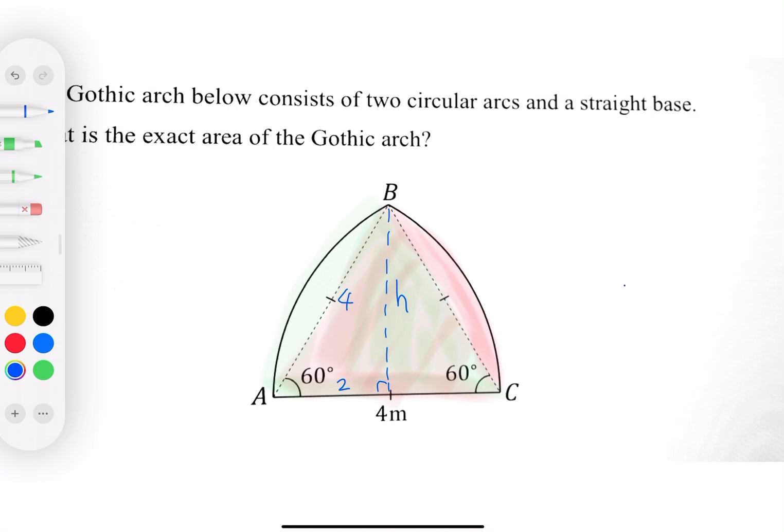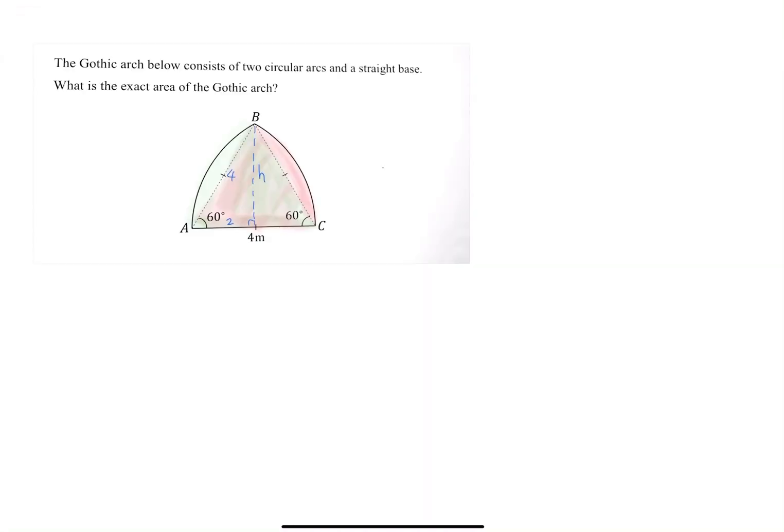Let's find the height of the triangle. We do Pythagorean theorem, so 4² equals h² plus 2². Therefore h² equals 4² minus 2², which equals 12. Therefore h equals √12, which is also equals to 2√3.